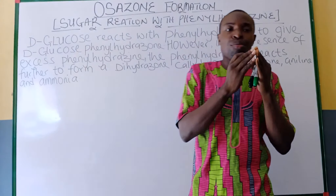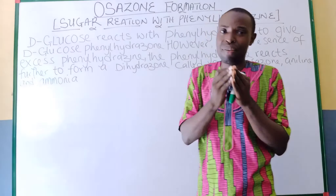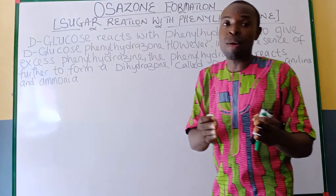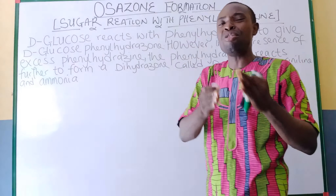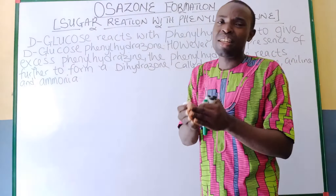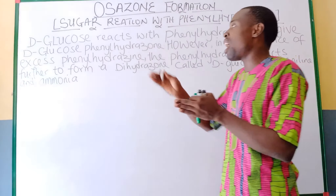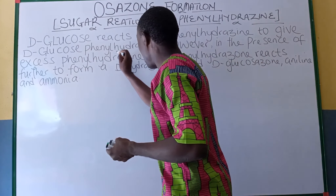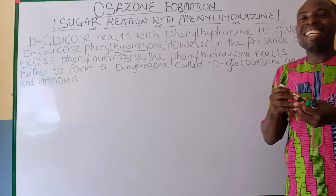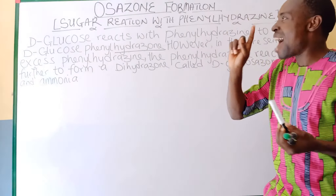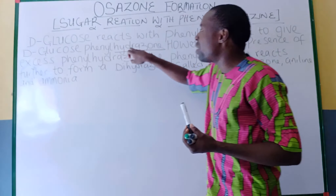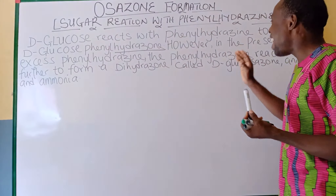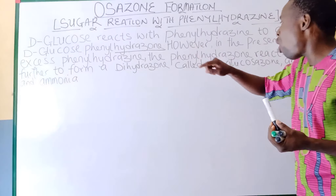The first step is that the monosaccharide is being reacted first of all with phenylhydrazine to give us — for example, if I am making use of D-glucose — when D-glucose is being reacted with phenylhydrazine, the first product that will be formed should be D-glucose phenylhydrazone, which is called the osazone.